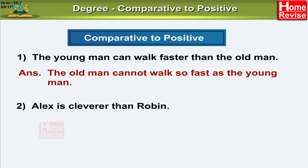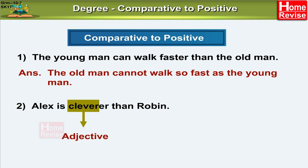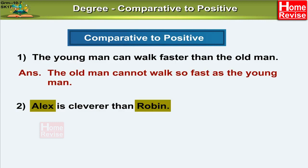Let's take another example. Alex is cleverer than Robin. You can very easily see the suffix -er added to the adjective 'clever' and the word 'than'. The phrase 'cleverer than' denotes comparative degree. We can see the comparison only between Alex and Robin. Hence, no superlative degree. Again, this is positive comparative degree, so we are going to have a negative positive degree.